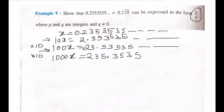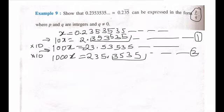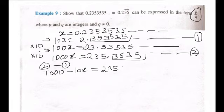Now you can see 353535 here. 353535 will come in this also. So if this is your equation 1, this is your equation 2, what you can do, you can subtract 2 minus 1. So it will be 1000 minus 10X is equal to 235.3535 minus 2.353535 and it will go on.